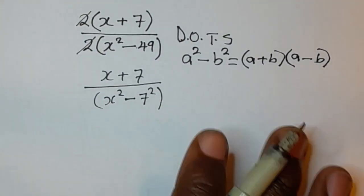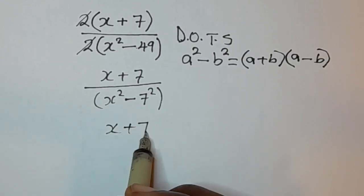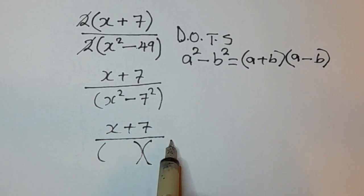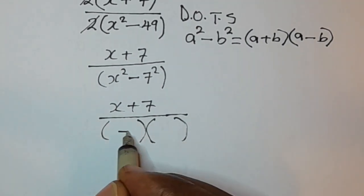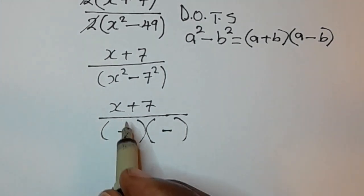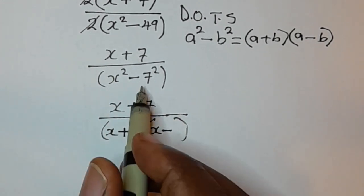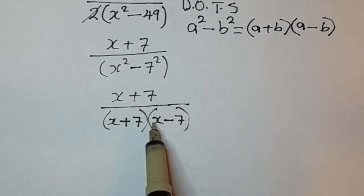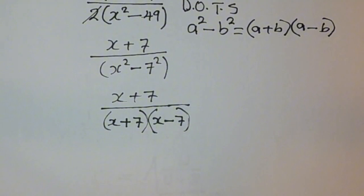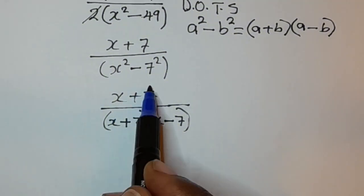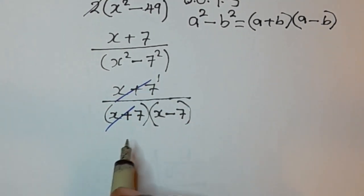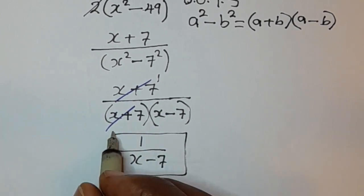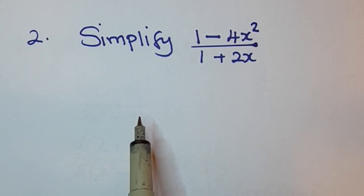So we're going to have x plus 7 all over — because we have this difference of two squares form, the denominator becomes (x + 7)(x − 7). You can see that on the top we have x plus 7 and on the bottom x plus 7, so they cancel. We are remaining with 1 on top, so the answer is 1 over x minus 7.